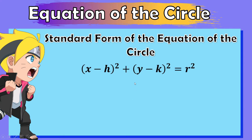The standard form of the equation of the circle is given by (x minus h) squared plus (y minus k) squared is equal to r squared. Another name for this form is what we call the center-radius form. It is called that because from this equation we can determine the coordinates of the center of the circle, denoted by h and k, and the length of the radius.